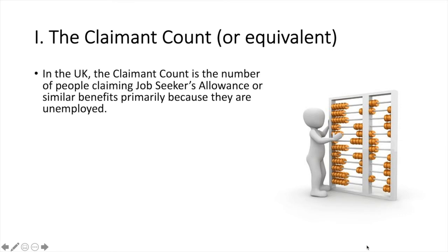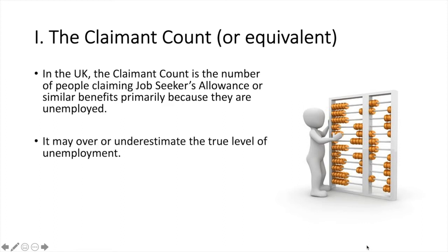In the UK, the claimant count is the number of people claiming job seekers allowance or similar benefits, primarily because they are unemployed. This number may over or underestimate the true level of unemployment.